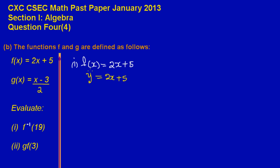After replacing f of x with y, the next step is to interchange x and y — we just switch places with x and y. Wherever I see x, I replace it with y, and wherever I see y, I replace it with x. So therefore I would have x is equal to 2y plus 5. Now I'm going to make y the subject.